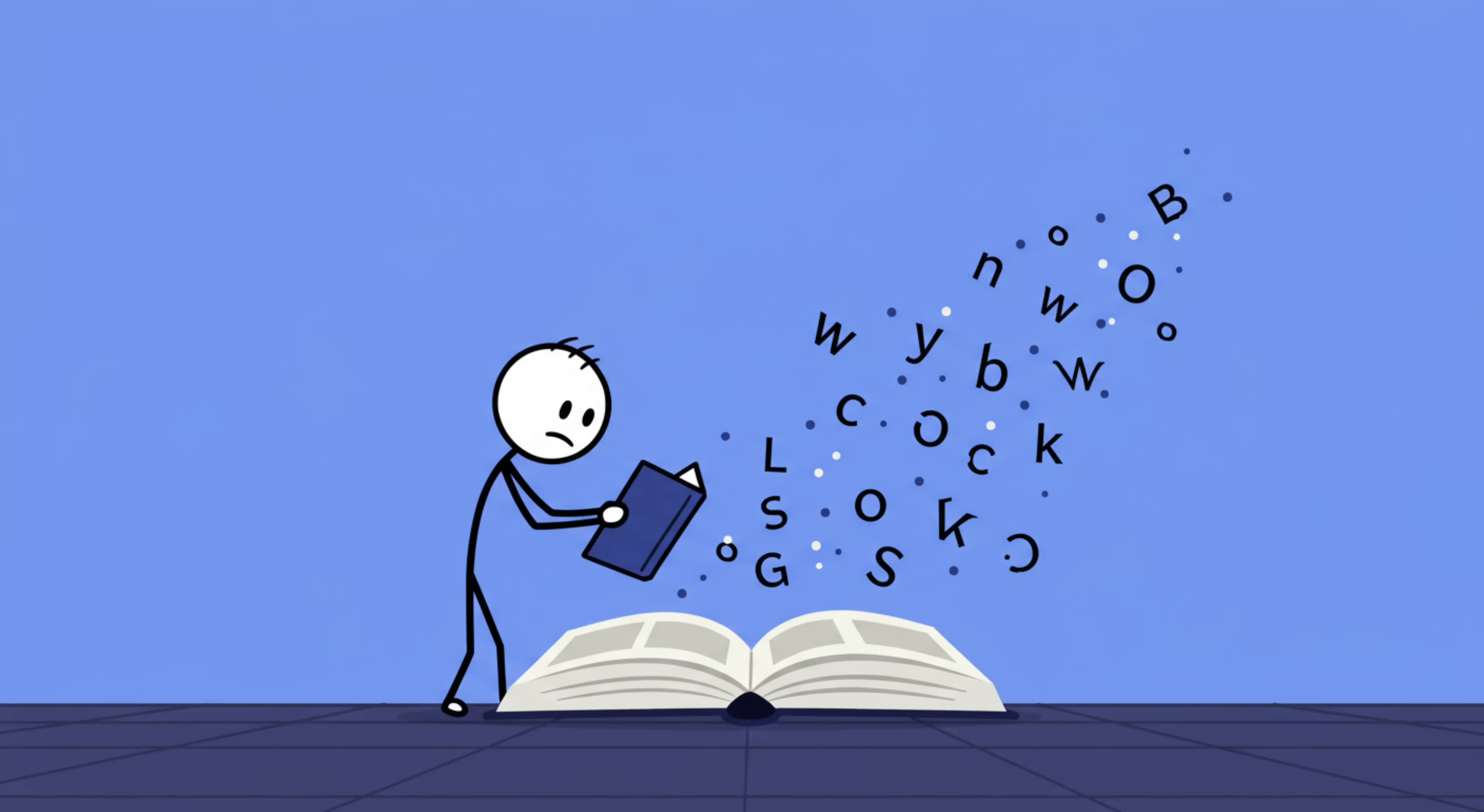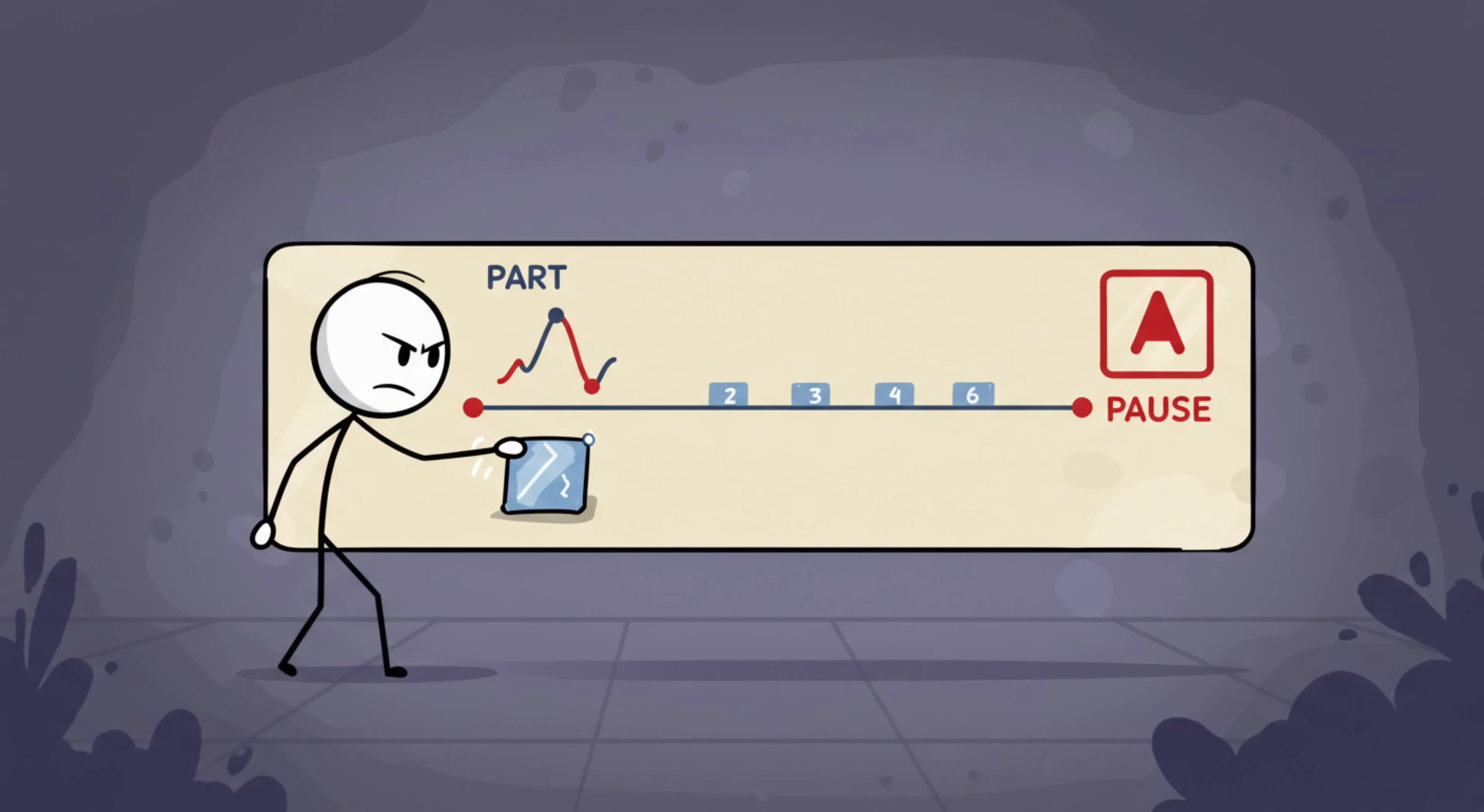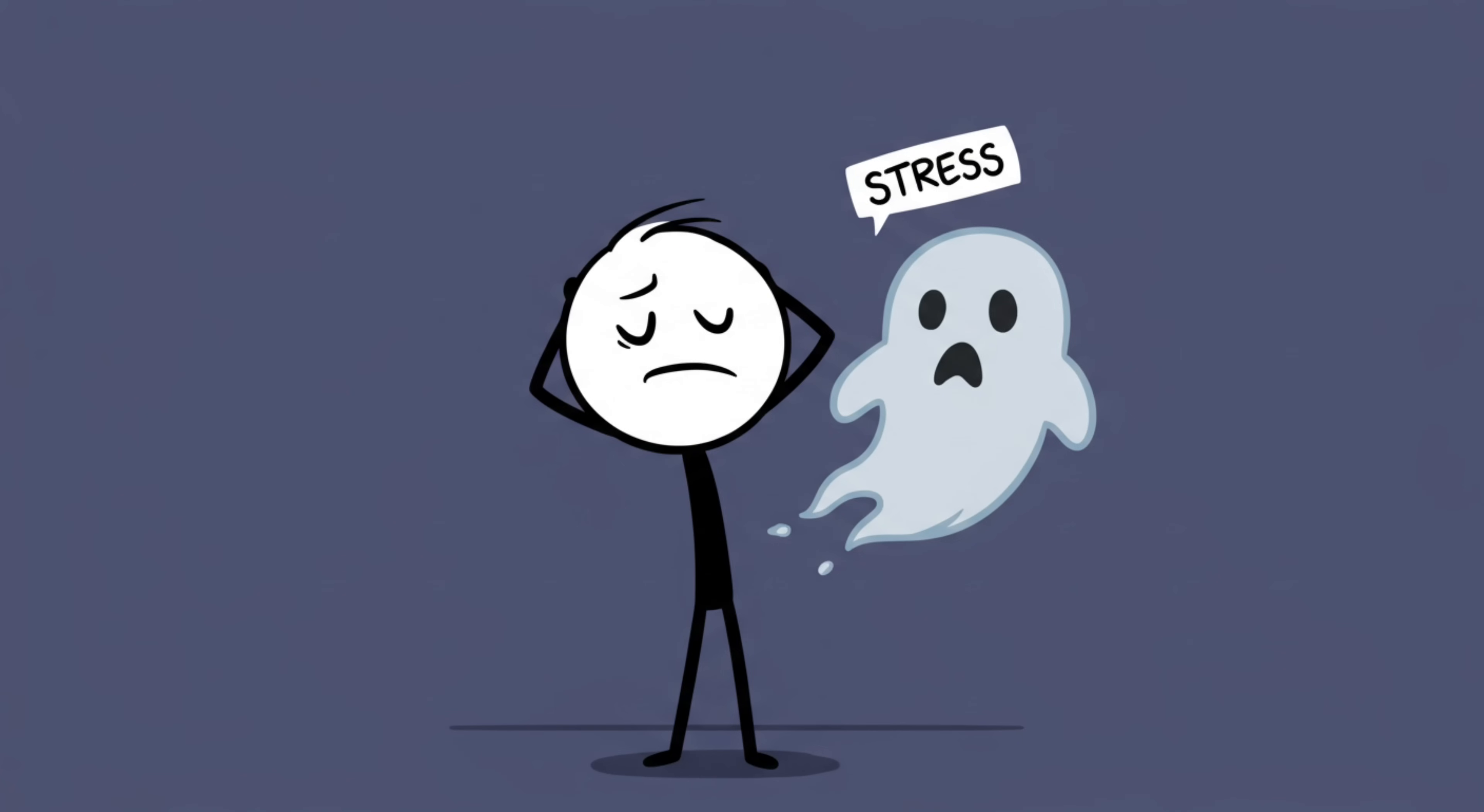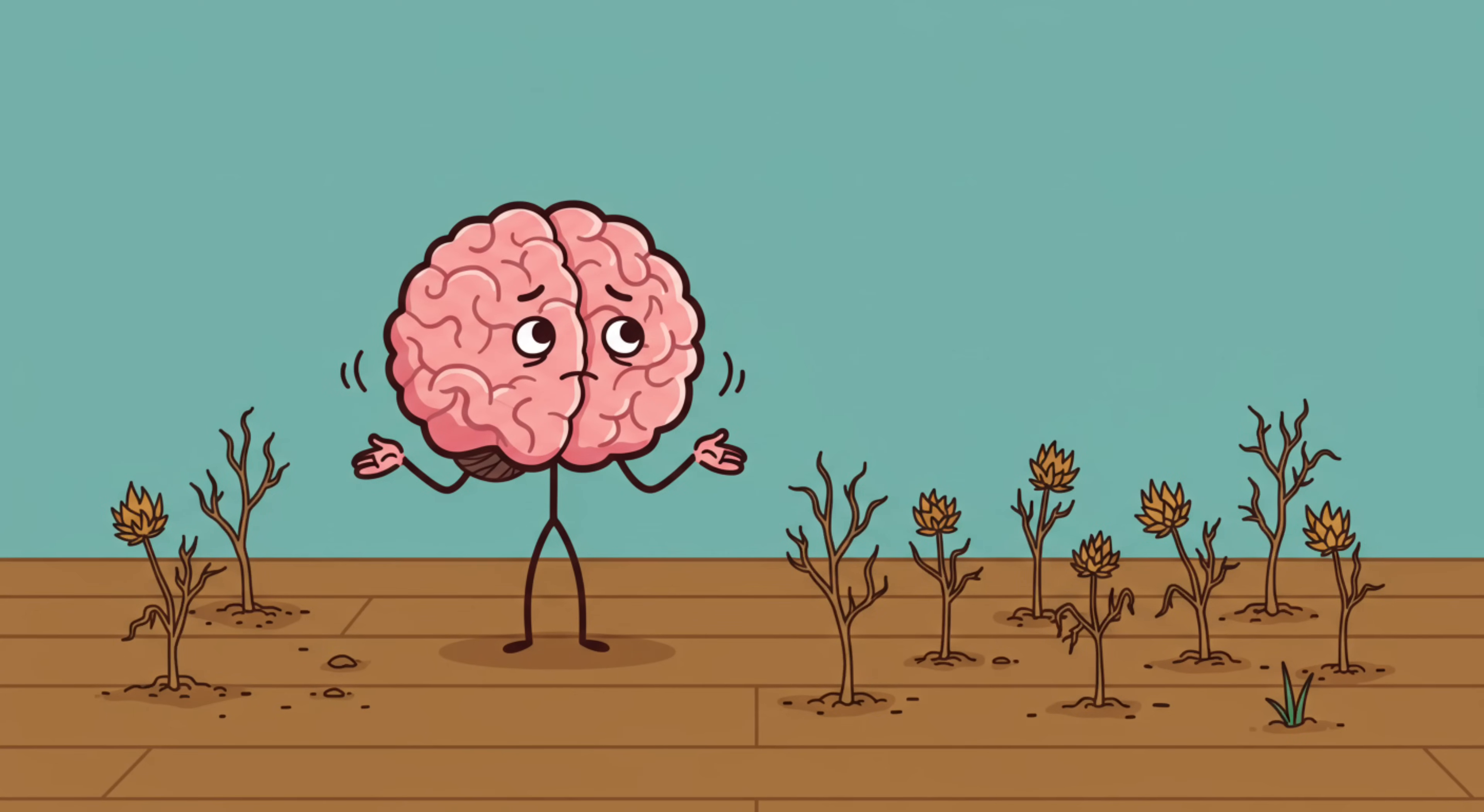It's also why people often forget things they learn right after a stressful event. Imagine firefighters trying to memorize directions while a building is still smoldering. Good luck. Stress doesn't just affect past memories, it puts future ones on hold. So yeah, stress doesn't just make your memories unreliable in the moment. It lingers, turning your brain into that friend who swears they'll totally remember to water your plants, and then kills them all.